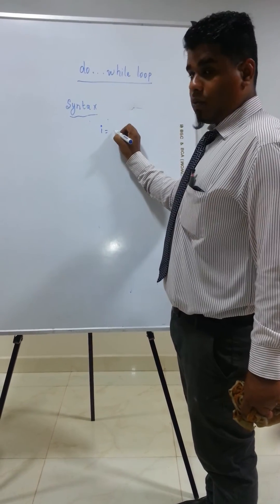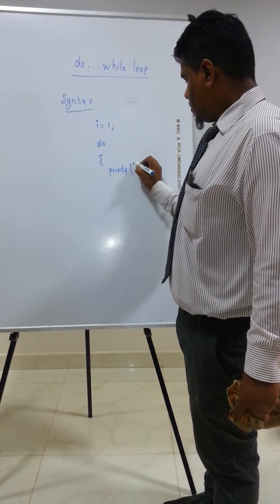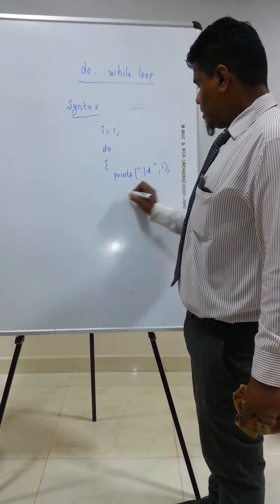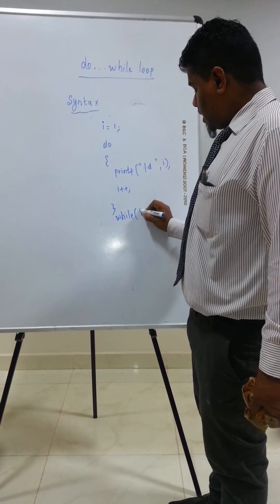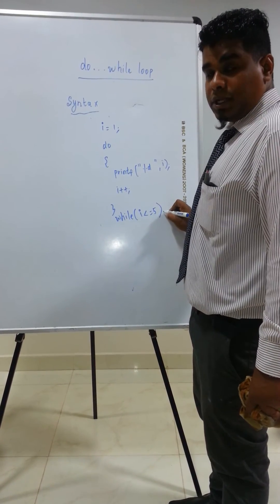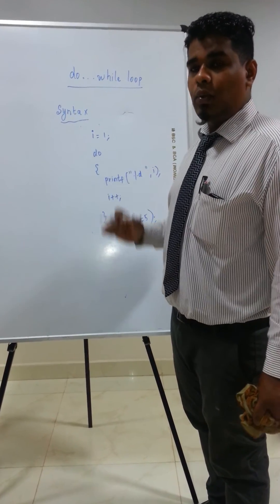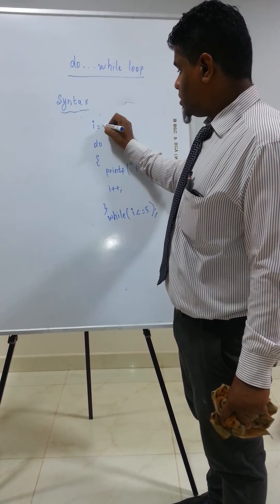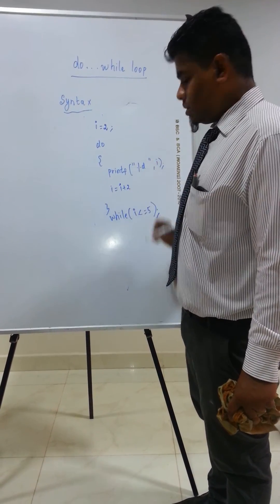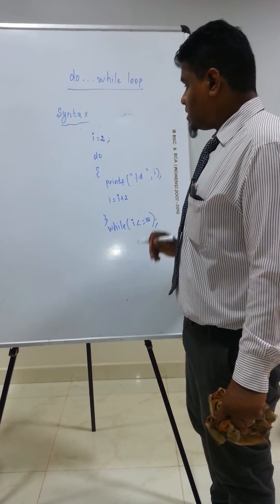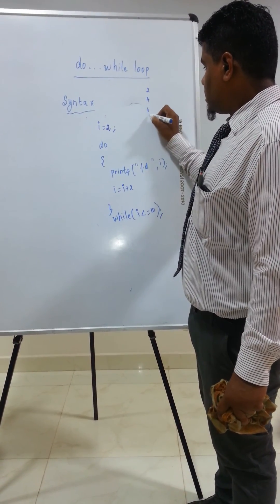In order to print the numbers from 1 to 5 using do-while: i = 1; do { printf(%d, i); i++; } while(i <= 5); — and at the end I must not forget to put the semicolon. If I want to print the numbers 2, 4, 6, 8, 10, I set i = 2, use i = i + 2 as the increment, and the condition becomes while(i <= 10). This is the logic for the do-while loop.